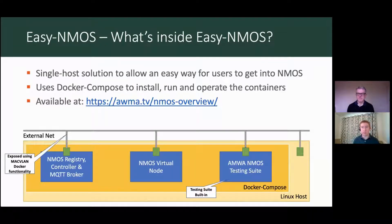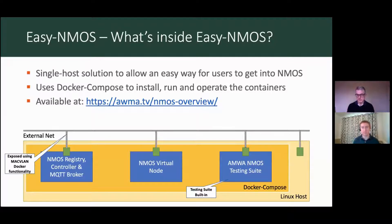So once I've got Easy NMOS downloaded and set up, what will I have access to inside it? When you start Easy NMOS using Docker Compose or the Orchestrator, it effectively starts three containers. The great news is that Docker Compose will automatically download these containers from Docker Hub if you haven't already got them on your server. The first container has a full implementation of an NMOS registry.